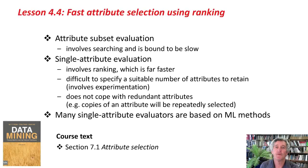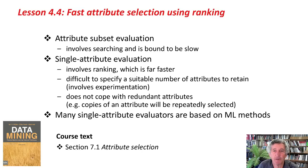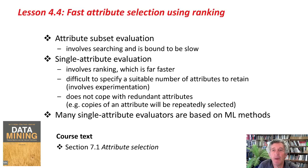So that's it. We've seen that attribute subset selection involves searching, which is bound to be slow no matter how quickly you can evaluate the subsets. Instead, we can use single attribute evaluation — it involves ranking, which is really fast. It's hard to specify a suitable cutoff; you need to do experimentation. It doesn't cope with redundant attributes — for example, if you have copies of an attribute, they will be repeatedly selected because attributes are evaluated individually. Many single attribute evaluators are based on machine learning methods we've already looked at.